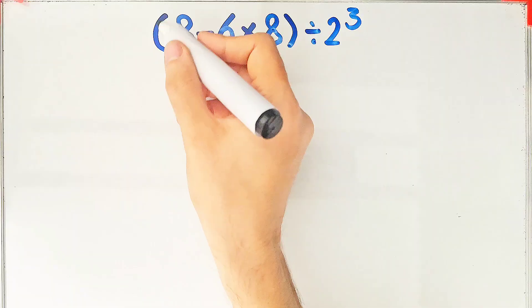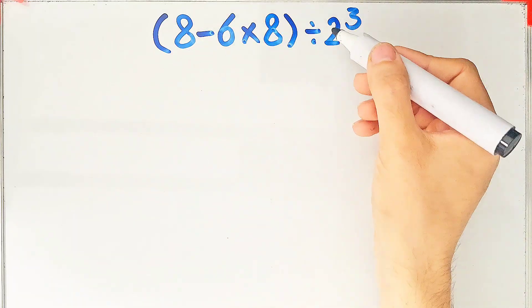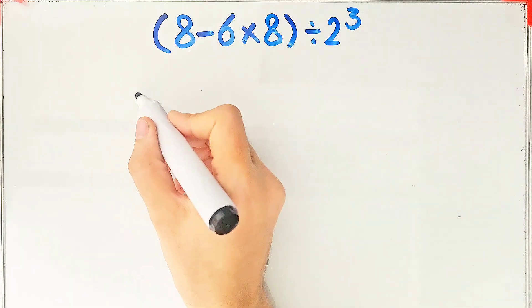In this question, we have 8 minus 6 times 8, then divided by 2 to the power of 3.